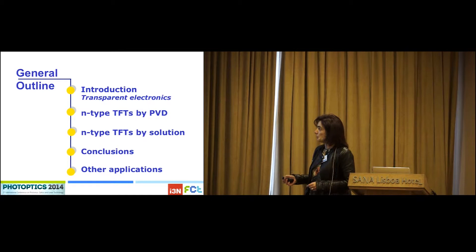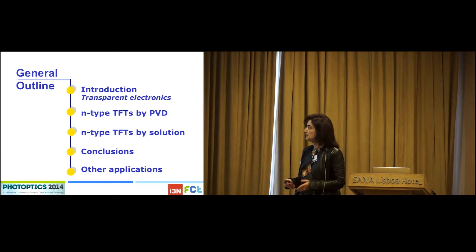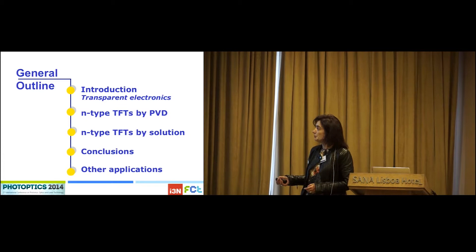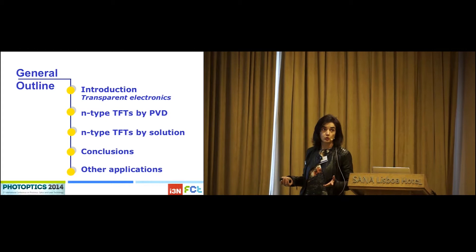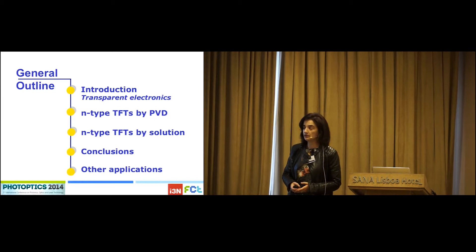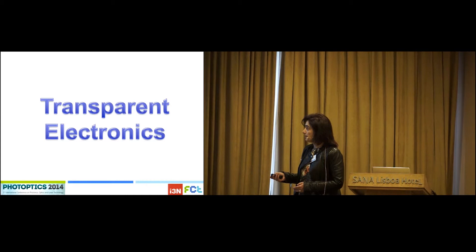In terms of the outline, I will briefly cover these topics: a short introduction about transparent electronics, just to explain a little bit about what it is — it is an emergent field. After that, I will talk about N-type thin film transistors, either grown using conventional technology like sputtering, but also I will present some preliminary and new results on the same type of devices using alternative and low-cost technologies like solution-based. I will finalize with the main conclusions, and also present some other applications, because the core of my talk is about thin film transistors, mainly used for displays, but these new semiconductors can be used in a broader range of applications.